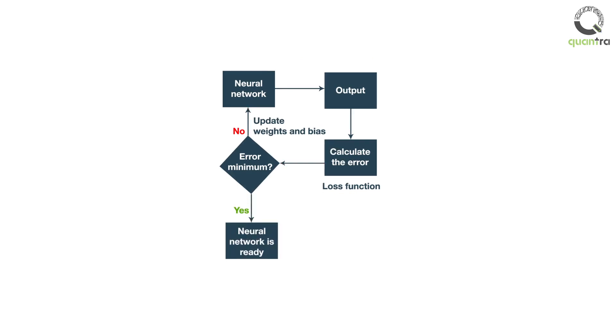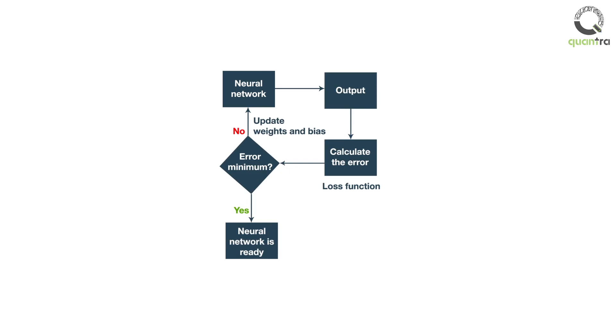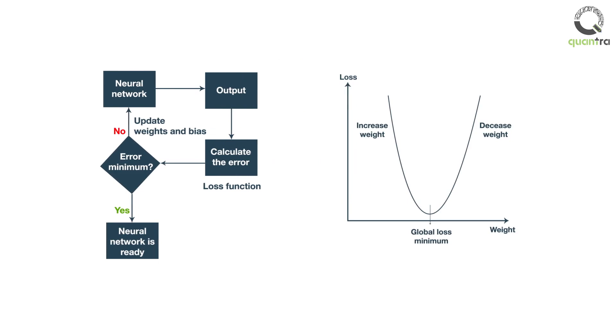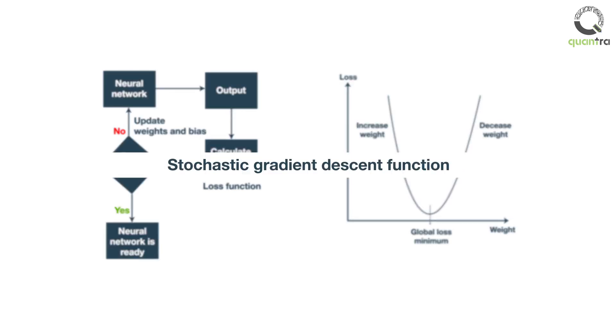In the previous example, we have used trial and error method to reduce the error but generally, a complicated technique such as gradient descent is used to determine the required change in weights and biases. In our model, we have used a stochastic gradient descent function which is a popular iterative method to gradually reach a minimum of the loss function.